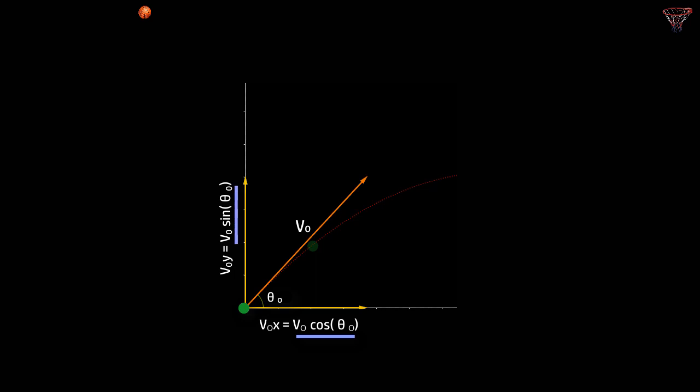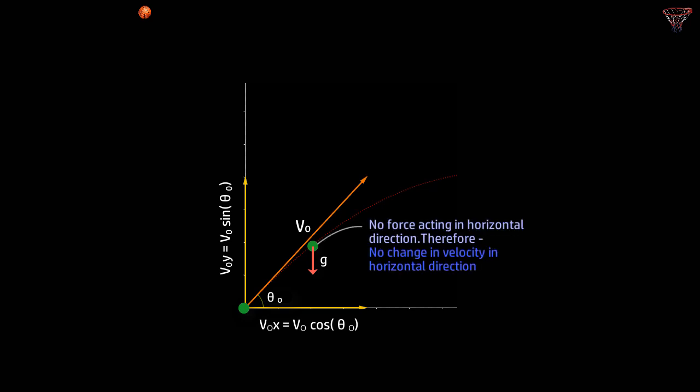Something important to notice is that the only force acting on the ball is in the vertical direction — that is the force of gravity. Since there is no horizontal force acting on the ball, the velocity of the ball does not change throughout its path. This makes things simpler: the velocity does not change in the horizontal direction.